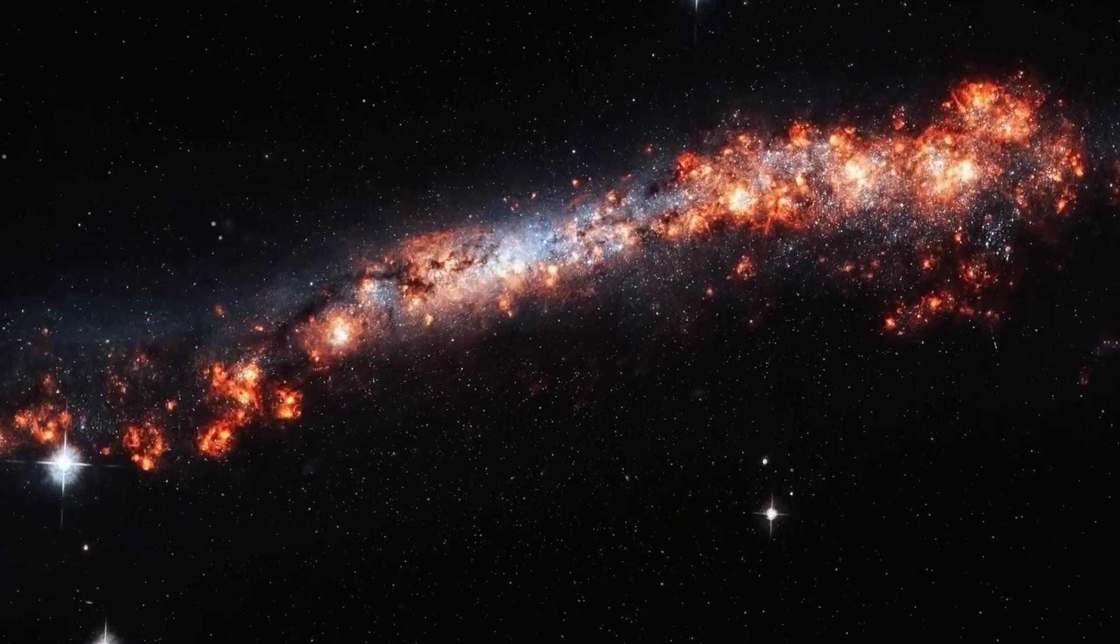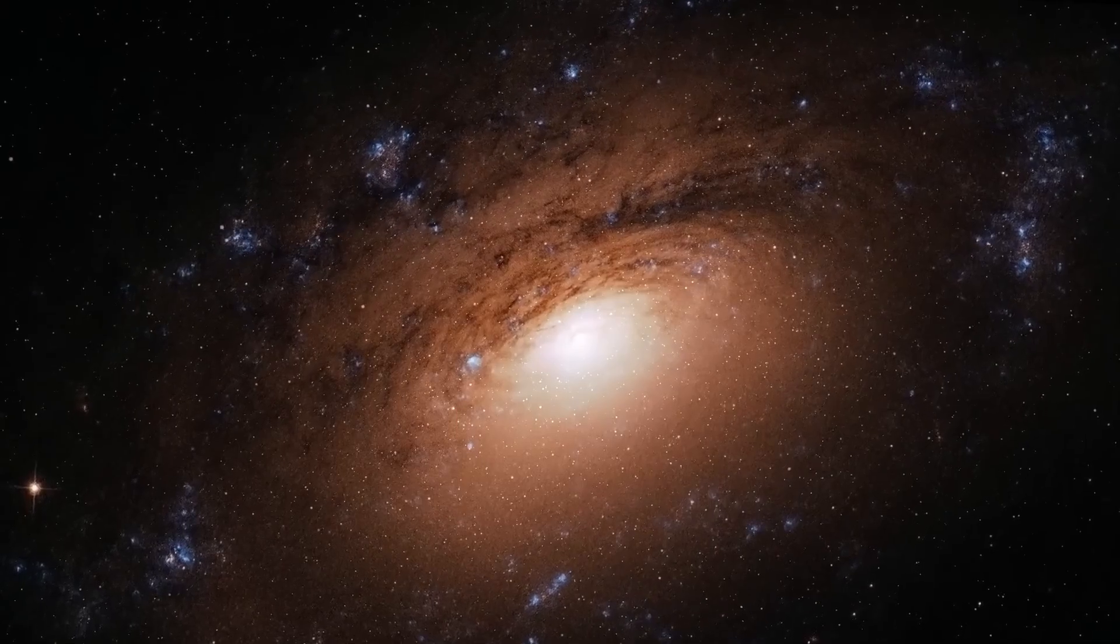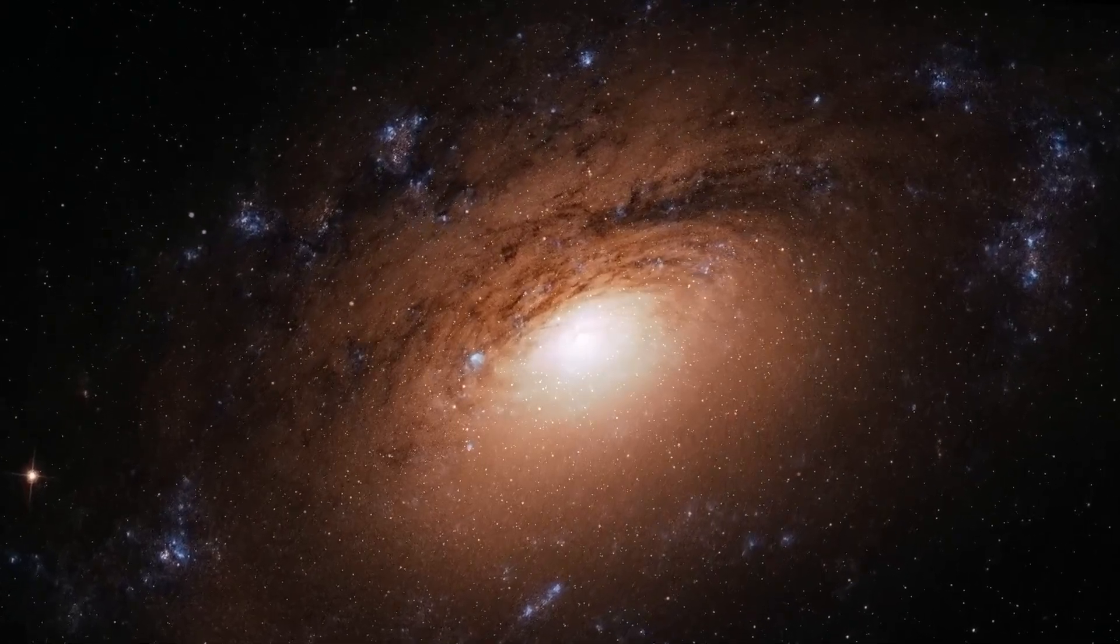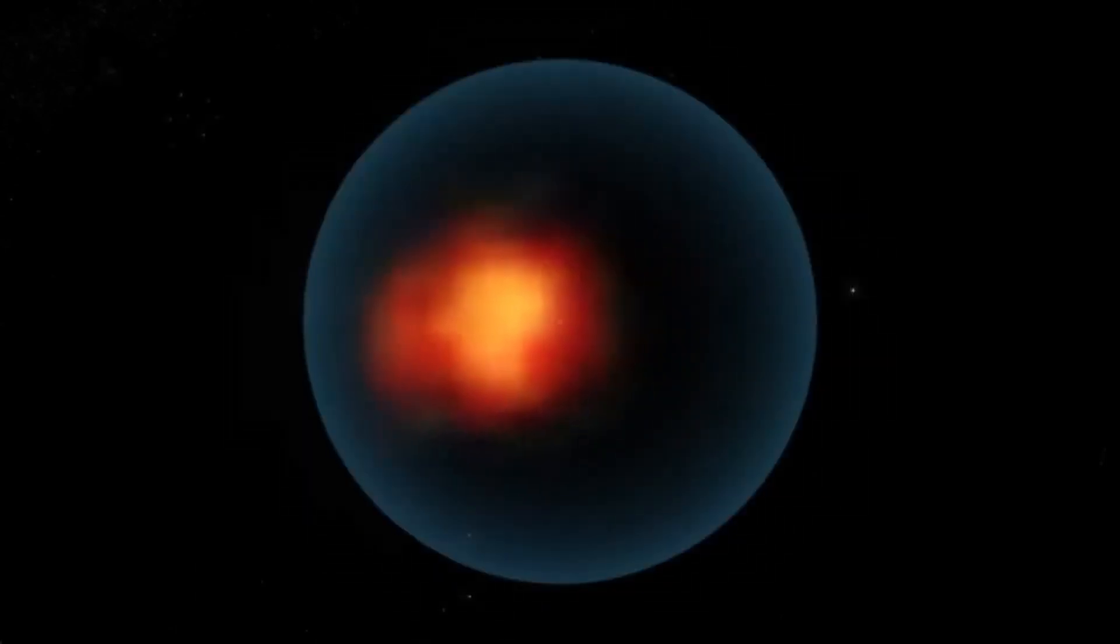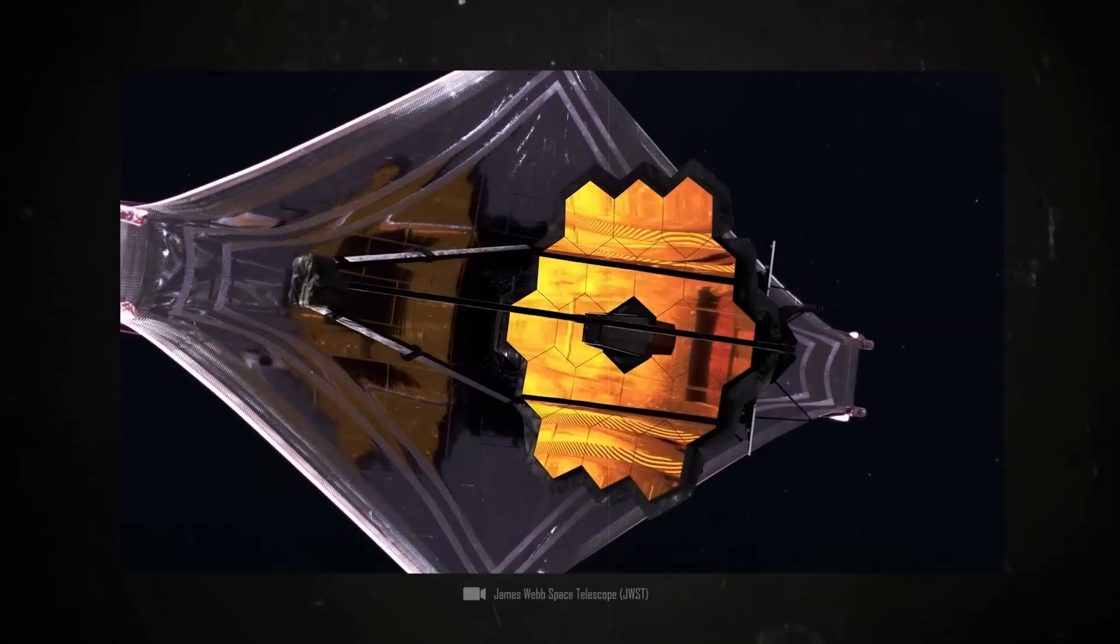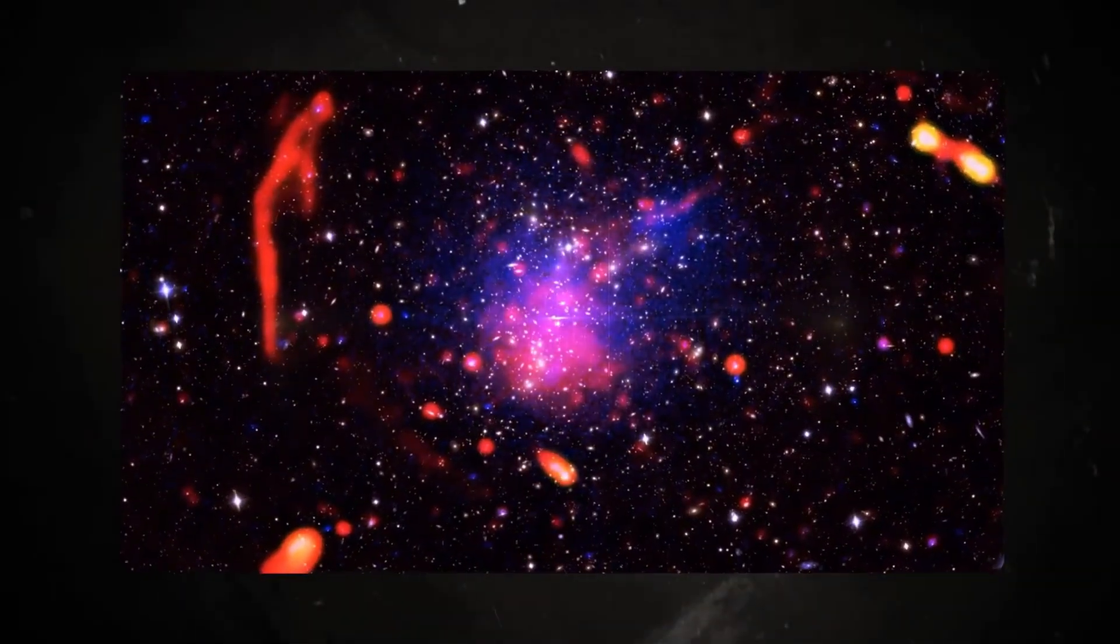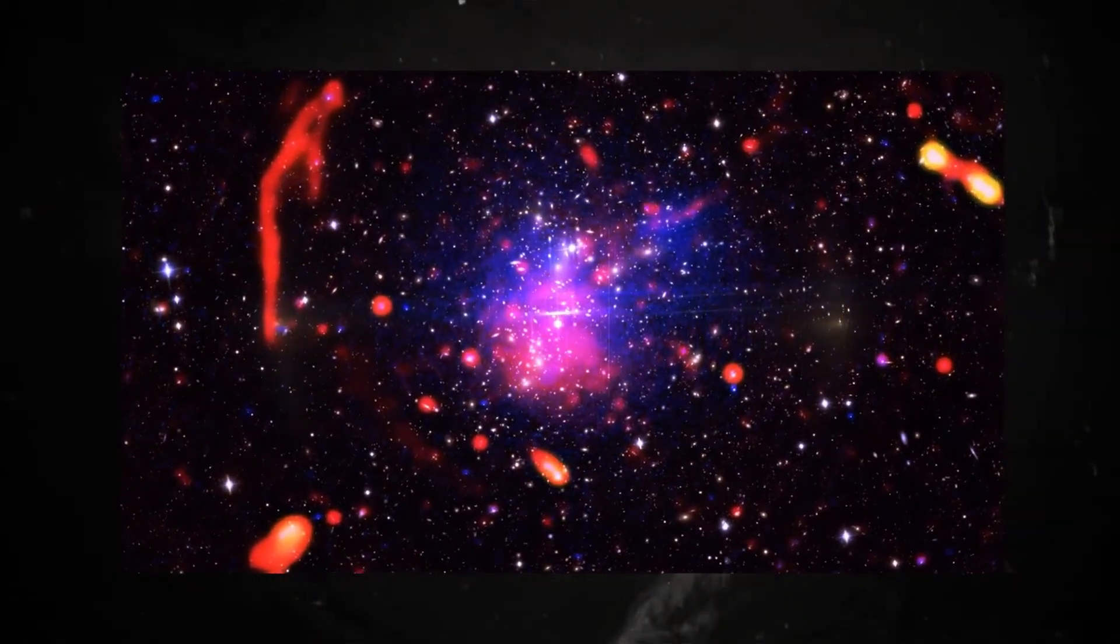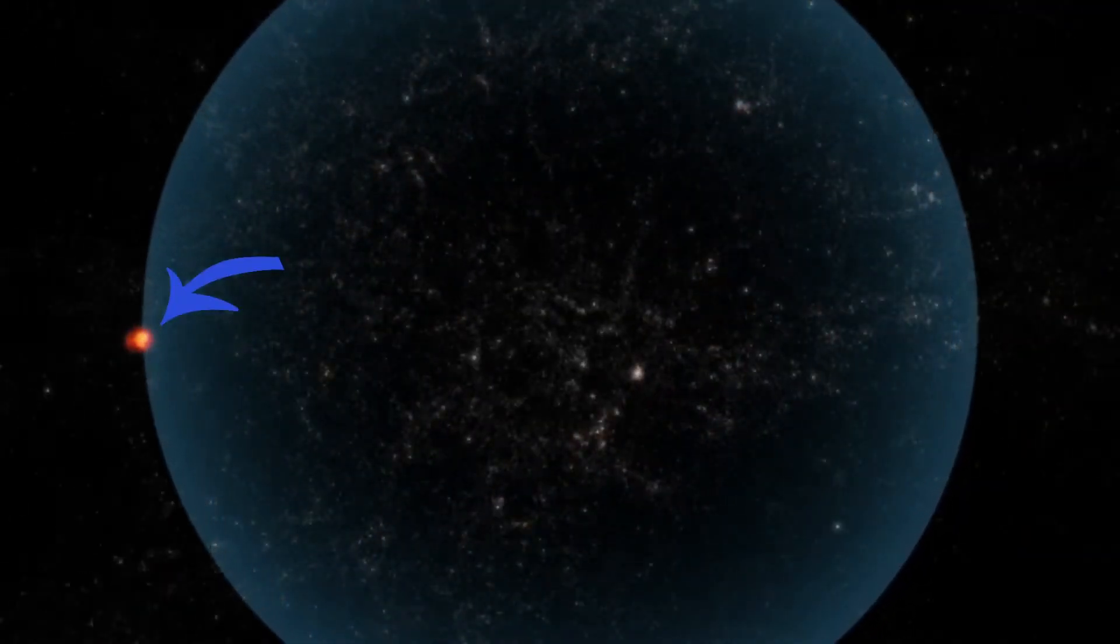The most distant galaxy ever discovered by the Webb Telescope, the Mazes Galaxy, which existed just 450 million years after the Big Bang, also exists inside the Hubble Sphere. But we know that our universe is expanding, and as the universe expands, this Hubble region is becoming larger and larger, making it possible for objects beyond this Hubble region to be visible.